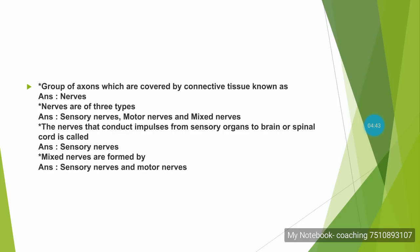A group of axons covered by connective tissue forms nerves. Nerves are of three types: sensory nerves, motor nerves, and mixed nerves. Sensory nerves conduct impulses from sensory organs to the brain or spinal cord. Mixed nerves are formed by the combination of sensory and motor nerves.